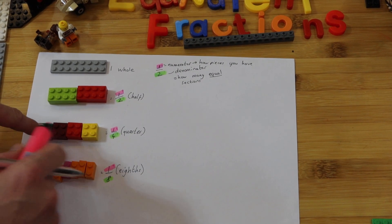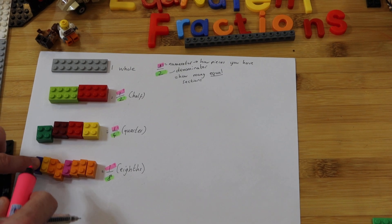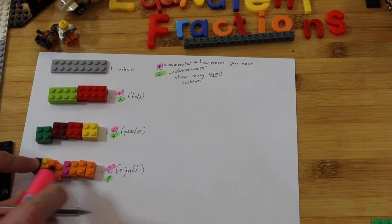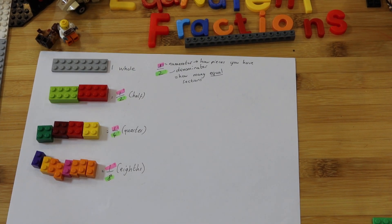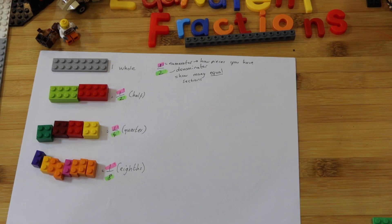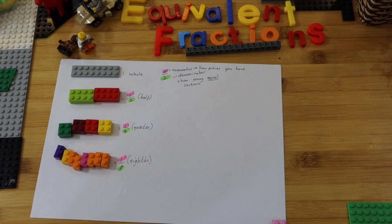So one section here — if I take this one it's called one half. If you take this section it's one out of four. If I take this one it's one out of eight. Right, so let's have a look at some equivalent fractions.